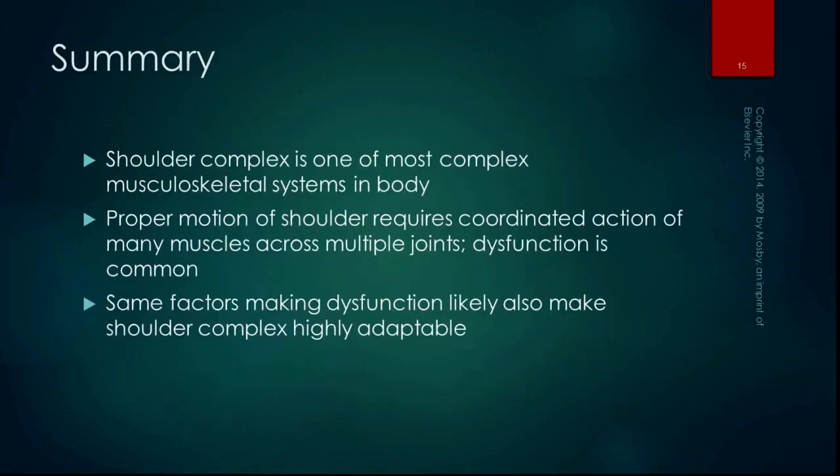In summary, the shoulder complex is very complicated — one of the most complex musculoskeletal systems in the body, but also very functional. Proper shoulder motion requires coordinated action of many muscles across multiple joints, and shoulder dysfunction is one of the most common reasons people come into physical therapy and have trouble with activities of daily living. The factors that make shoulder dysfunction likely also make it highly adaptable: its high mobility and large number of muscles make it adaptable, but if one muscle isn't doing its job, it affects the whole group. Overall, the shoulder is a pretty awesome joint.